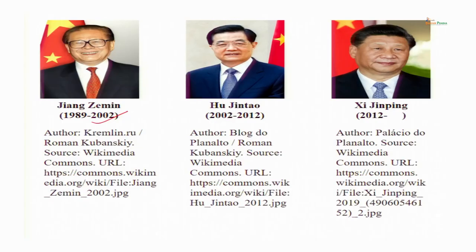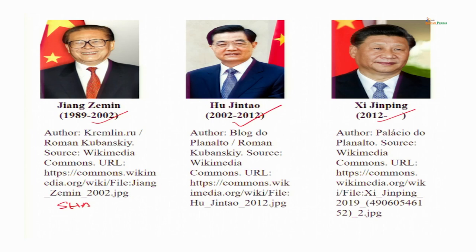Jiang Zemin was succeeded by Hu Jintao, who served from 2002 to 2012, and then was succeeded by Xi Jinping. Jiang Zemin had a power base mainly from Shanghai, and therefore the people he promoted came to be known as the Shanghai clique.